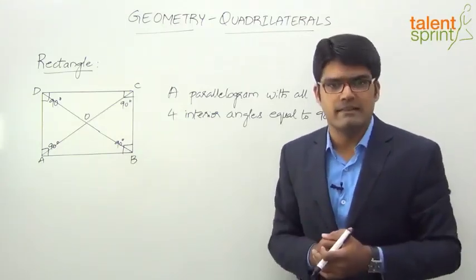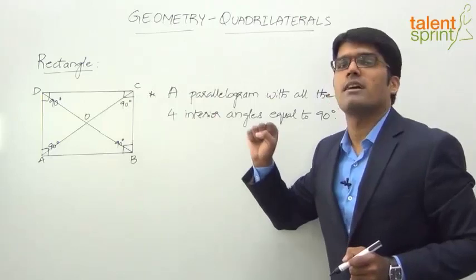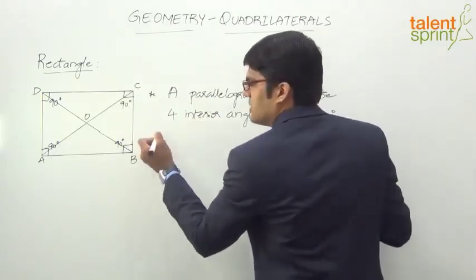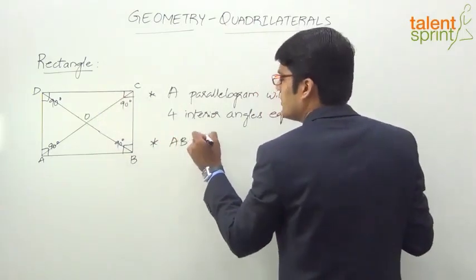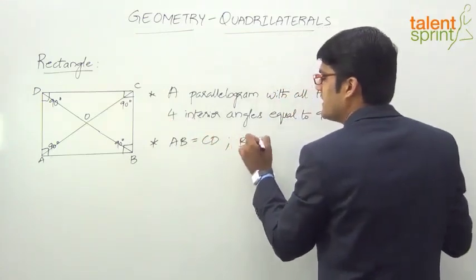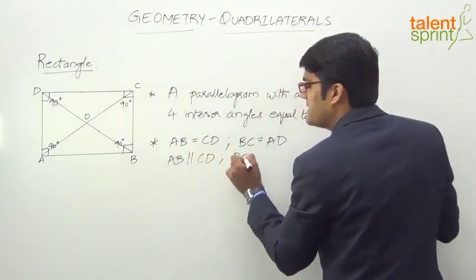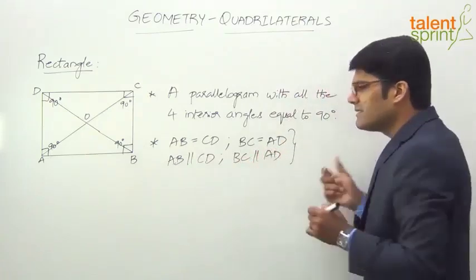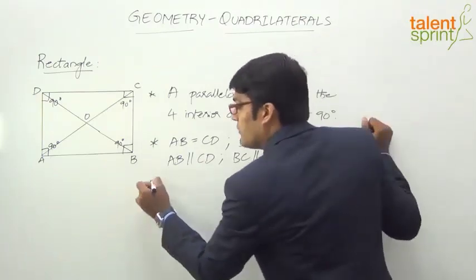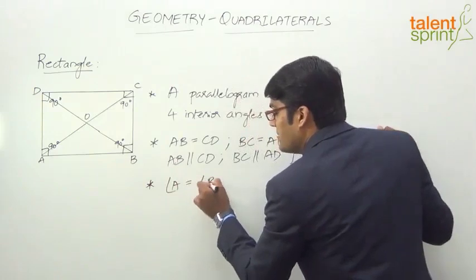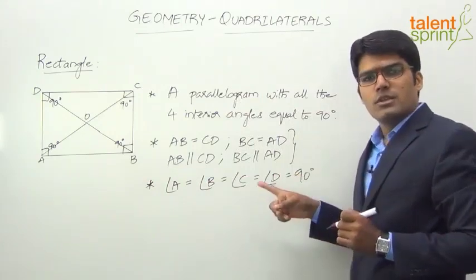Now let us look at the properties of a rectangle. Since we have already discussed the properties of a parallelogram, it shouldn't be difficult to follow. One property is that all opposite sides are equal: AB equals CD, and BC equals AD. Also, they are parallel: AB is parallel to CD, and BC is parallel to AD. Additionally, all four angles are equal — angle A equals angle B equals angle C equals angle D equals 90 degrees.